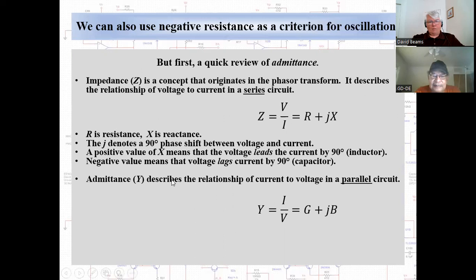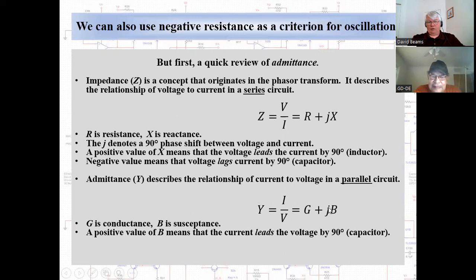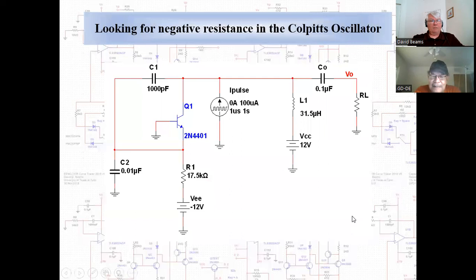Admittance is the relationship of current to voltage in a parallel circuit — all elements have the same voltage across them and the total current is the sum of the currents flowing in each parallel branch. The components of admittance are conductance G and susceptance B. A positive value of B means the current is leading the voltage by 90 degrees — capacitive susceptance — and a negative value means the current is lagging the voltage, so we have an inductor.